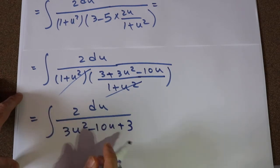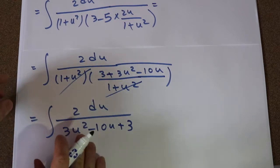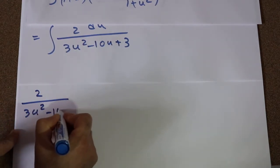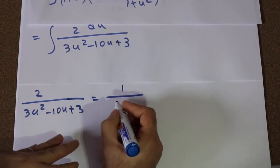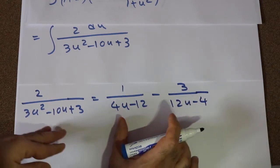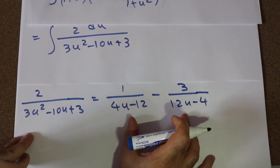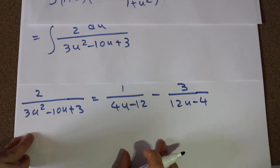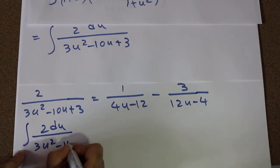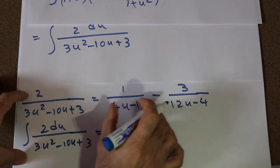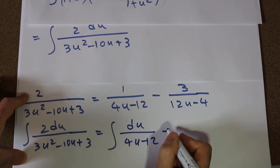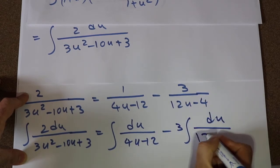Now you have this rational function. To take this integral, you need to express it in terms of partial fractions. Using algebra, you can show that 2 divided by 3u² minus 10u plus 3 is equal to 1 divided by 4u minus 12, minus 3 divided by 12u minus 4. If you're not sure how to do partial fractions, write for me in the comment section. Therefore, the integral of 2 du divided by 3u² minus 10u plus 3 equals the integral of du divided by 4u minus 12, minus 3 times the integral of du divided by 12u minus 4.